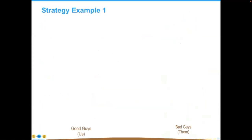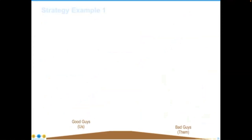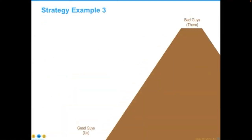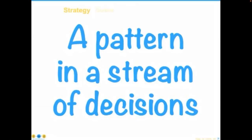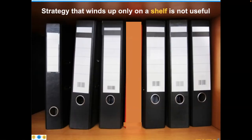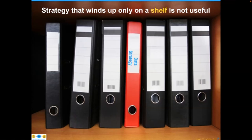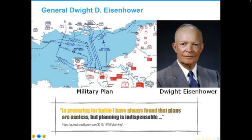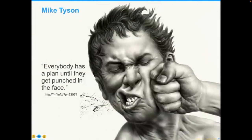In a more operational context, if we're the good guys at the top of the mountain, we'll have a different strategy than if the bad guys are at the top. This is why 'a pattern in a stream of decisions' is such an important definition to adopt. A strategy on a shelf just isn't useful because there's no muscle memory. As General Eisenhower said: 'In preparing for battle, I've always found that plans are useless, but planning is indispensable.' Mike Tyson restated it more vividly: 'Everybody has a plan until they get punched in the face.'